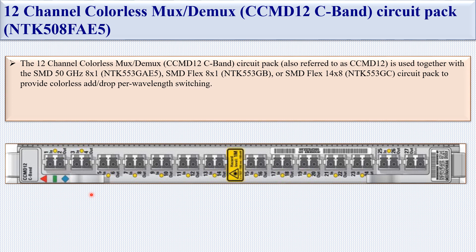The 12-channel colorless merge demux circuit pack, also referred to as CCMD 12, is used together with the SMD 50 GHz 8x1, SMD Flex 8x1, or SMD Flex 14x8 circuit pack to provide colorless add-drop per wavelength switching.